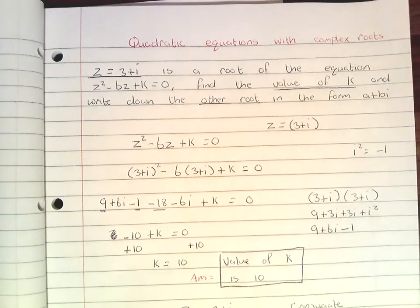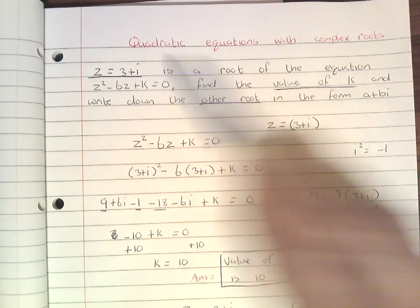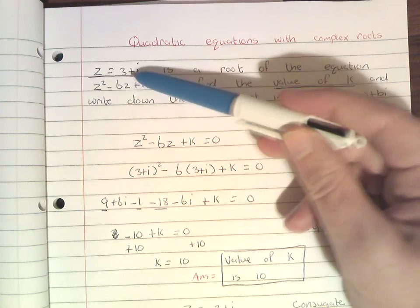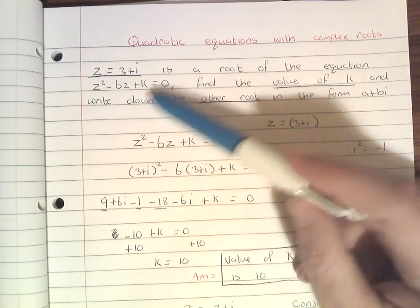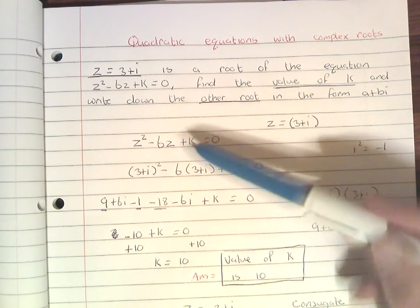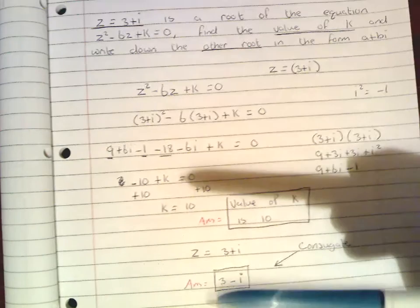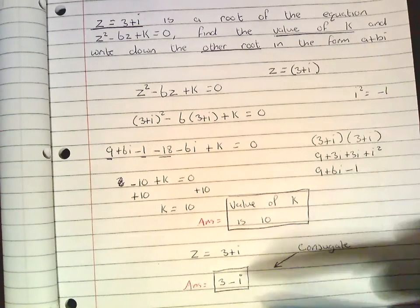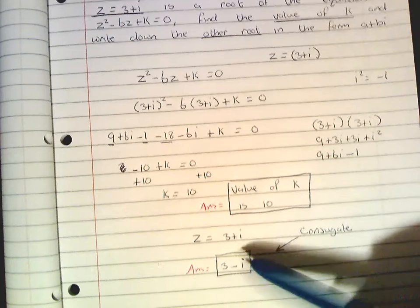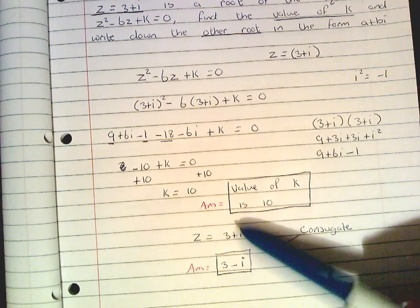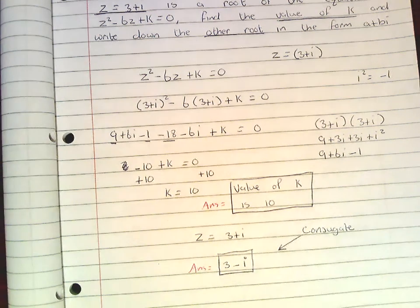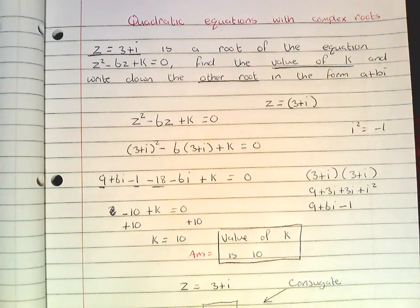So that's another type of question that you could be asked when looking at quadratic equations with complex roots. They might give you the root and there'll be some part of the quadratic that'll be an unknown, so you have to substitute the root into the quadratic and work out the unknown, like what we've done here. Or they could give you the root and ask for the other root — the other root is always going to be the conjugate, which is exactly the same except you change the sign in front of the imaginary part.